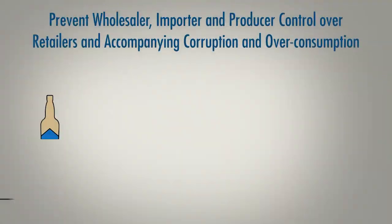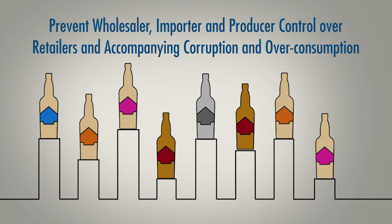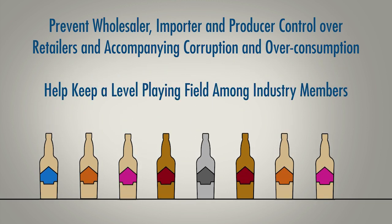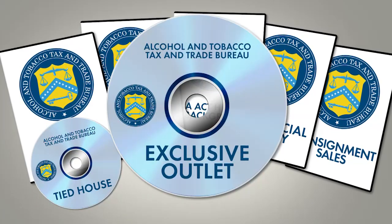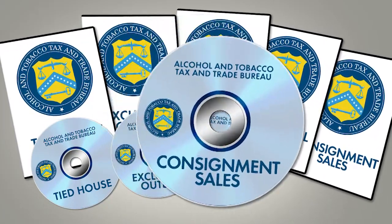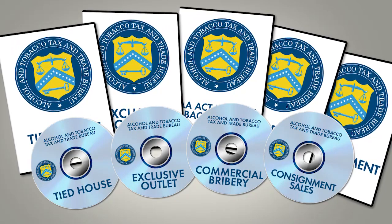To regulate promotional and marketing trade practices that might lead to corruption or excessive consumption, the FAA Act imposes restrictions on certain unlawful trade practices. This serves to prevent wholesaler, importer, and producer control over retailers and accompanying corruption and over-consumption, and to help keep a level playing field among industry members. There are four prohibited trade practices for alcohol beverage producers, wholesalers, and importers: Tied House, Exclusive Outlet, Commercial Bribery, and Consignment Sales. Please make sure to watch our additional videos which discuss these four prohibited practices in more detail.